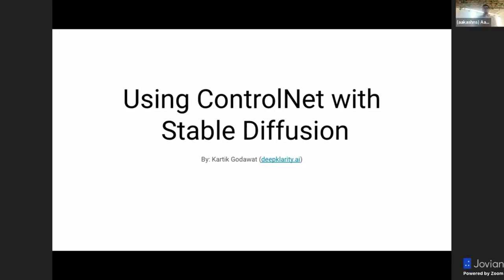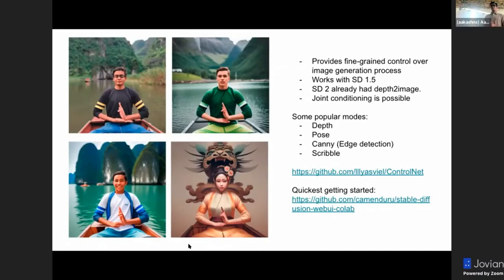ControlNet is an implementation that has been a game changer in this particular domain, because it now allows us as developers to take more control of these diffusion models, to generate images in different modalities and different forms. The way it works is because of a module called ControlNet, which is an extra set of neural network which goes alongside stable diffusion, and it allows to basically dictate the control process and the creativity within stable diffusion.